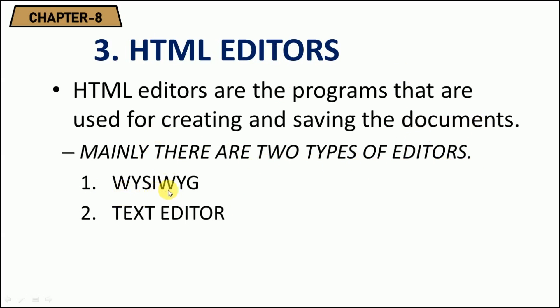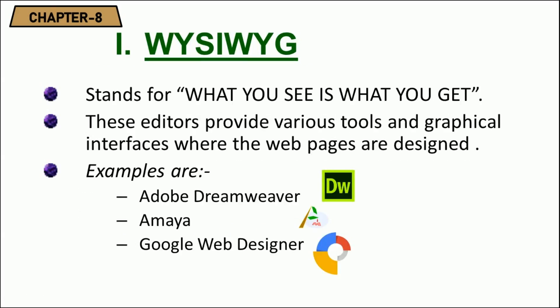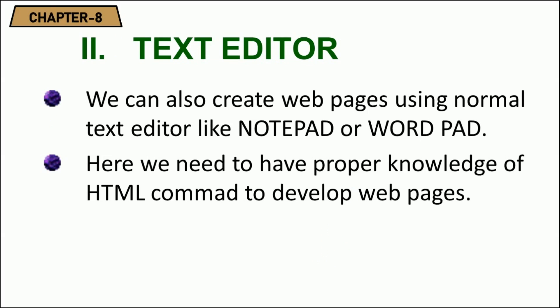The first type is WYSIWYG, which stands for 'What You See Is What You Get.' This type of editor allows a developer to see what the end result will look like while they are creating the web page. These editors provide various tools and graphical interfaces for designing web pages. This real-time preview is not available in the second type of editor.